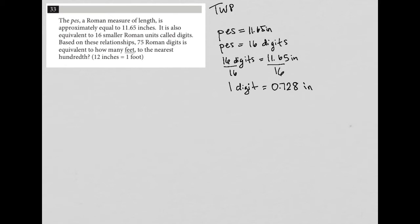So notice all of this that I did here without the question telling me, this is part of what's meant by this whole translation of the word problem. We want to really extract all the information out that we can. So the next sentence says, based on these relationships, 75 Roman digits is equivalent to how many feet to the nearest hundredth. And again, they tell us that 12 inches is equal to a foot, in case you forgot.